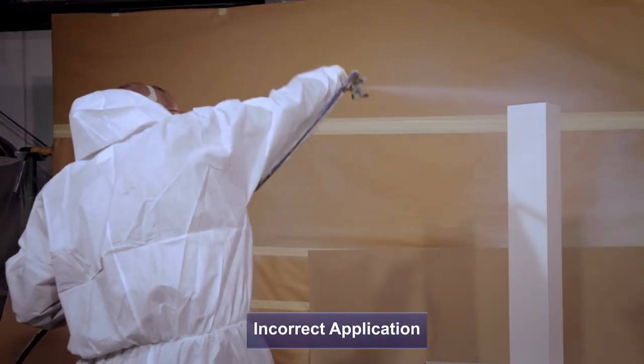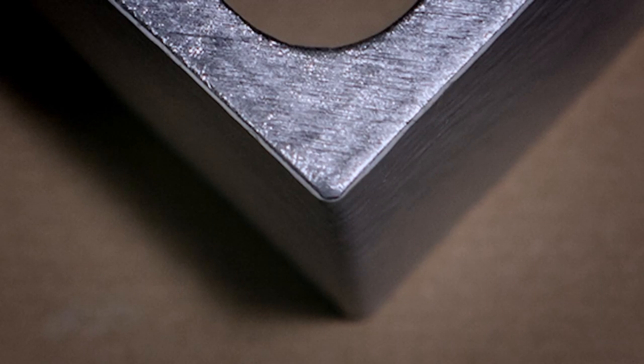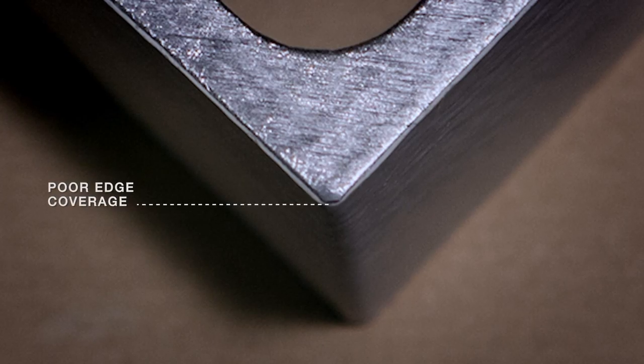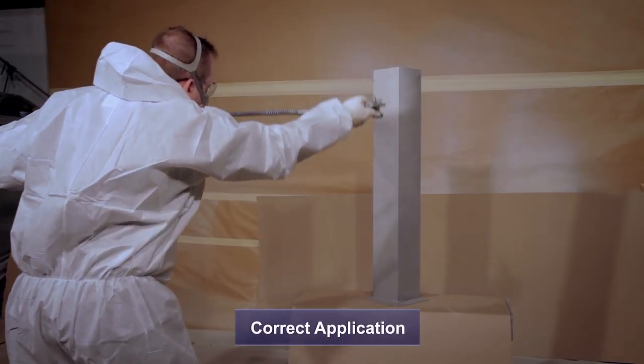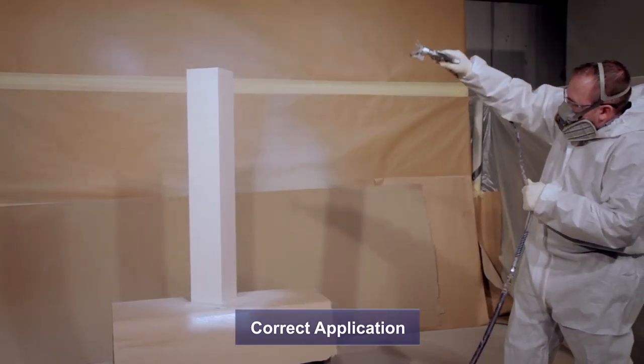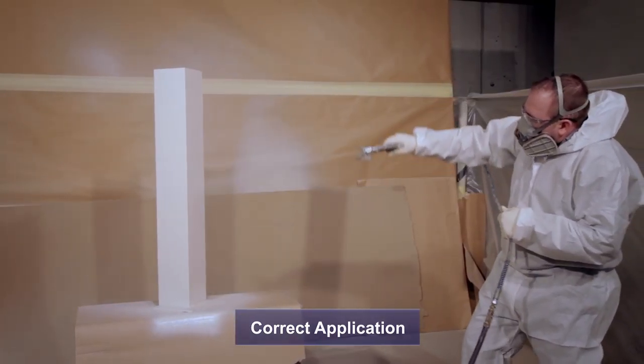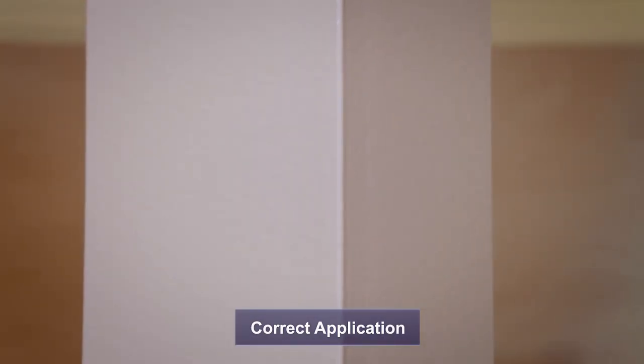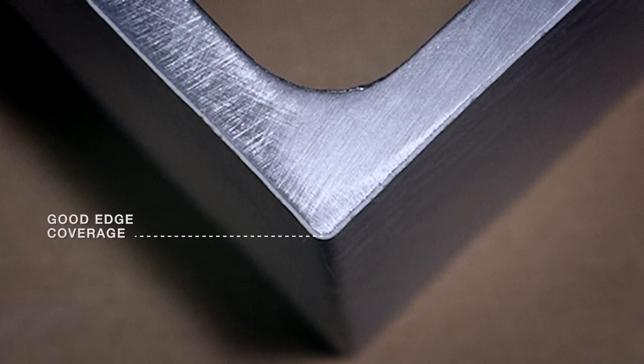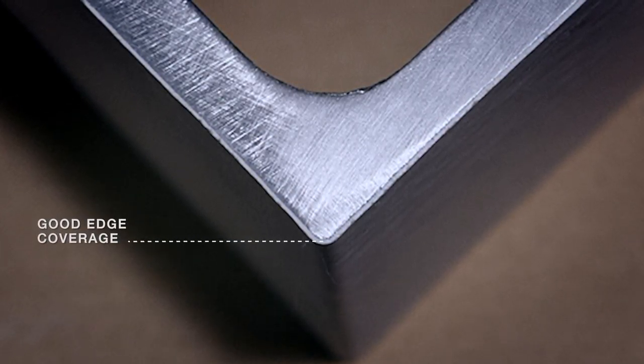Corrosion will take place more rapidly on a corner than on a flat surface. In order to achieve good edge coverage, the applicator must spray directly at the corner and then coat each face with the spray gun perpendicular to the surface. This will result in an accumulation of material at the edge, thus offering excellent coverage. This in turn will offer corrosion protection of this vulnerable area.